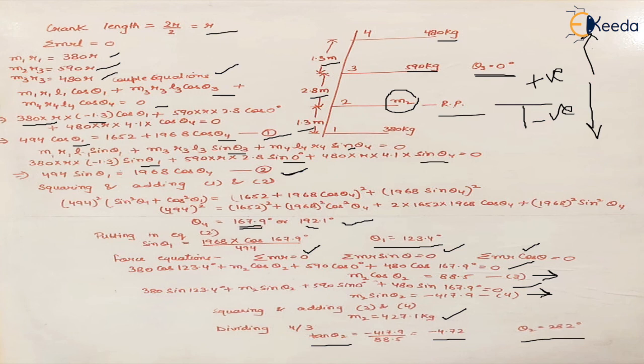Take care of the sign convention for tan(theta2). Whether the numerator is positive or negative, or the denominator is positive or negative, helps us find which quadrant the angle lies in. In this case, sine is negative and cosine is positive, so this is the fourth quadrant, allowing us to find theta2.